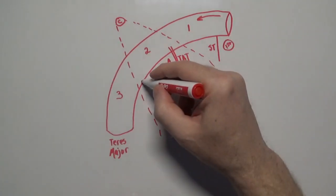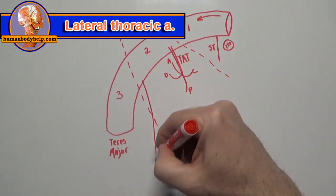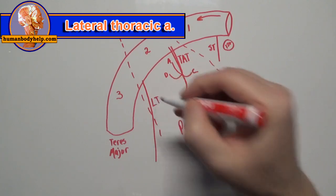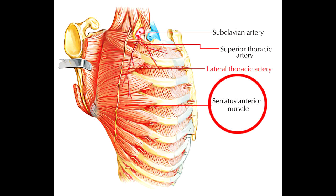The second branch off the second part of the axillary artery is the lateral thoracic artery. This artery runs down the side of the ribcage, passing over the serratus anterior muscle, and runs with the long thoracic nerve.